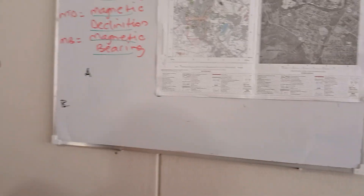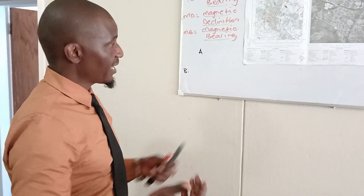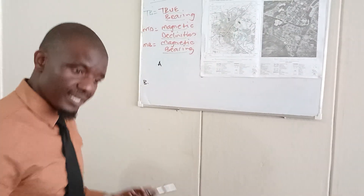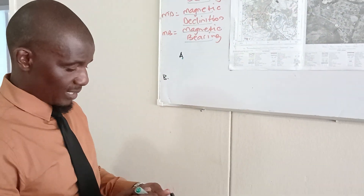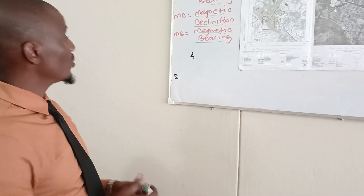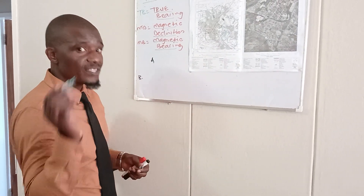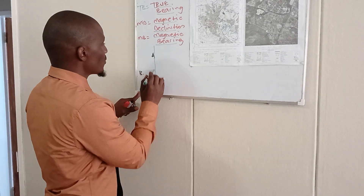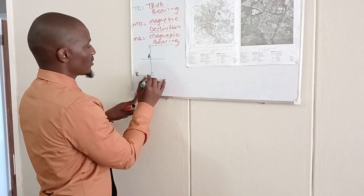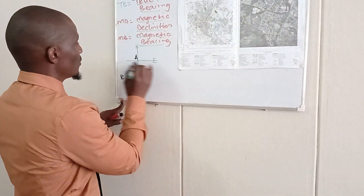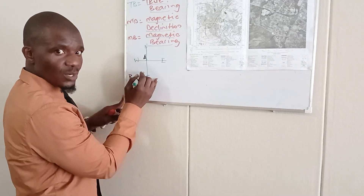I'm going to start with true bearing first. Remember, when you were in grade 5, you were asked to find the direction from a fixed point. What is the direction? Like, what is the direction of B from A? It was the direction from a fixed point. The first thing you would do was draw your cardinal points — your north, your south, east is always on your right, and west is always on your left. So the first thing you would do is draw your cardinal points.